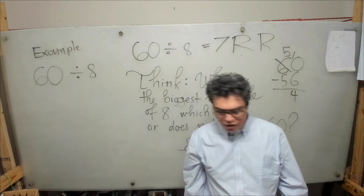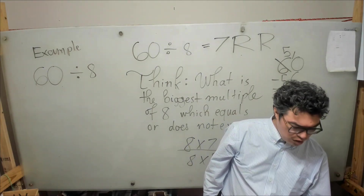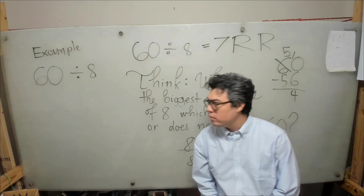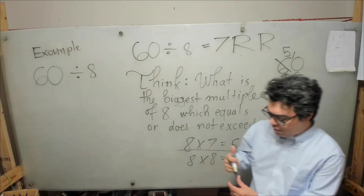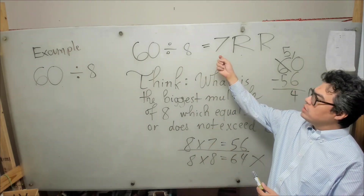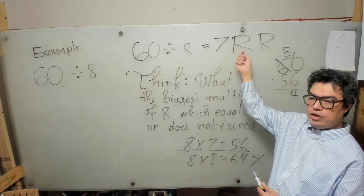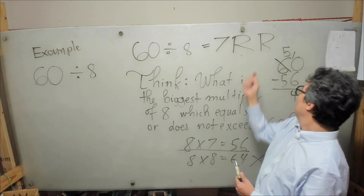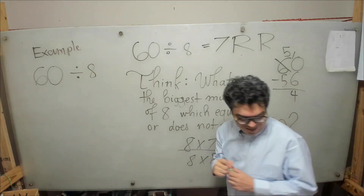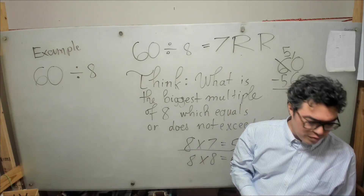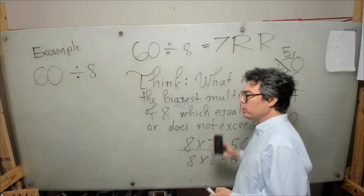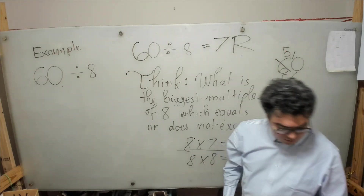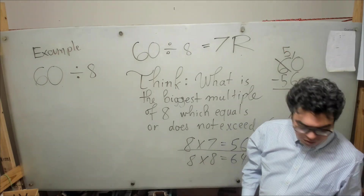So that's our remainder. 60 divided by 8 is equal to 7 remainder 4.